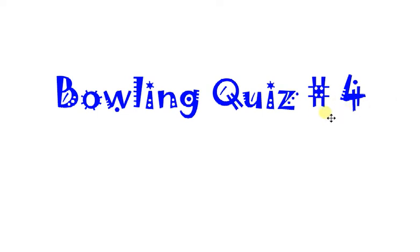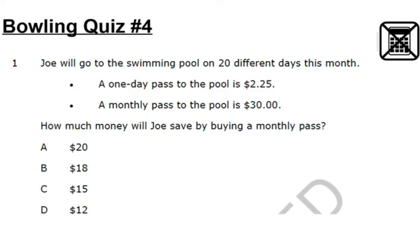All right, this is bowling quiz number four. This is the first quiz that you are not allowed to use a calculator on. This would be calculator inactive part of the EOG, and so it's going to test your skills with decimals and some other computation. Let's go ahead and get started.